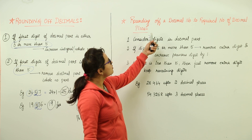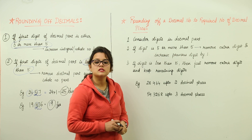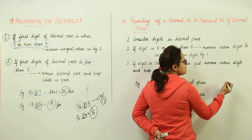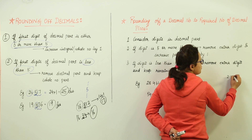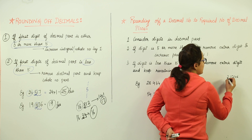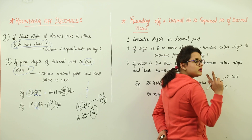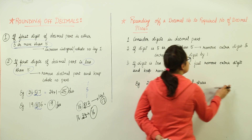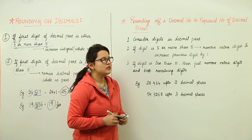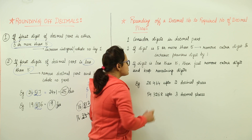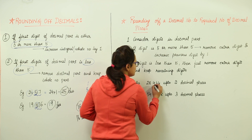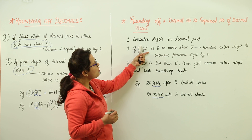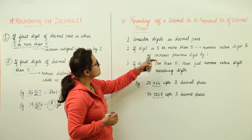Now we are going to do rounding off of decimal numbers to a required number of places. Sometimes the question asks you to give the answer to, say, 2 decimal places. For example, your division gives 2.1246 and the question asks for up to 2 decimal places. For this, consider the digits in the decimal part. If the digit in question is 5 or more than 5, remove the extra digits and increase the previous digit by 1.